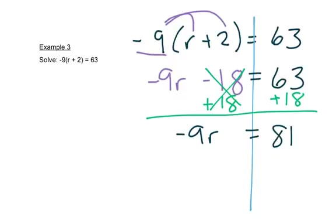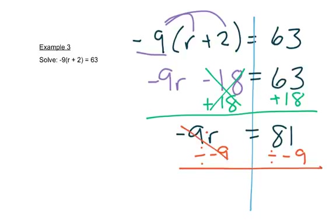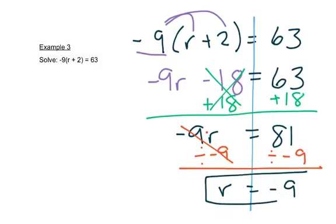On the left-hand side we have negative 9 times r, so we'll divide because the opposite of multiplication is division. That leaves us with r on the left, and 81 divided by negative 9 is negative 9 on the right.